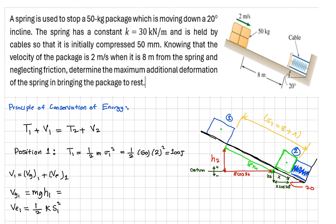Okay, right now we have a spring used to stop a 50 kilogram package which is moving downward on an inclined surface by 20 degrees. The spring has a constant K of 30 kilonewtons per meter and is held by two cables, so it is initially compressed by 50 millimeters. This is the initial force, the initial energy of the spring.